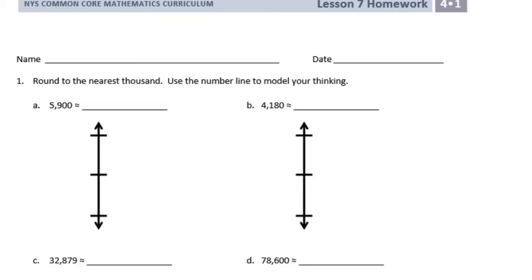Fourth grade, module 1, lesson 7 homework. Number 1, round to the nearest thousand. Use the number line to model your thinking.